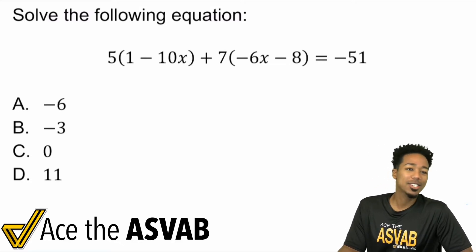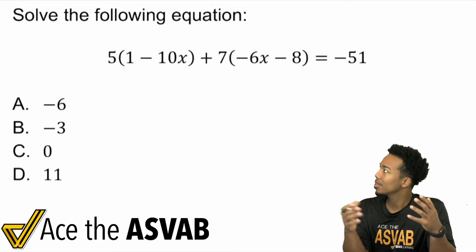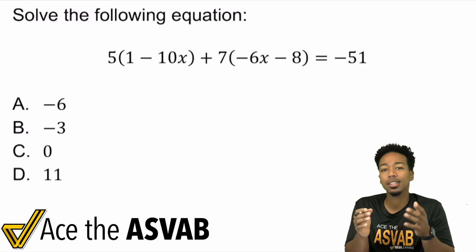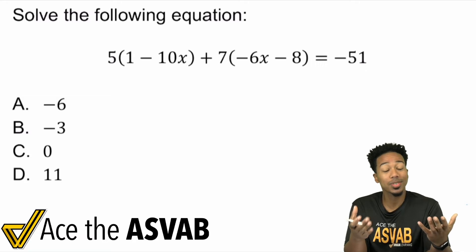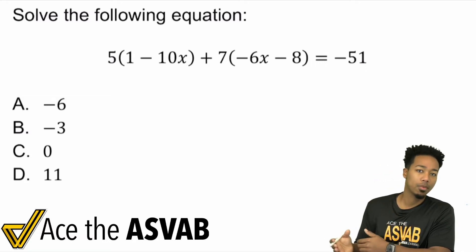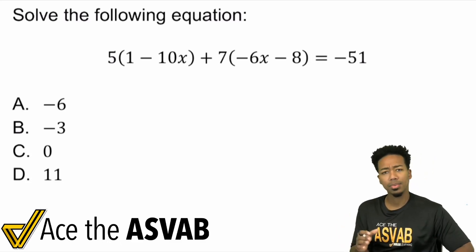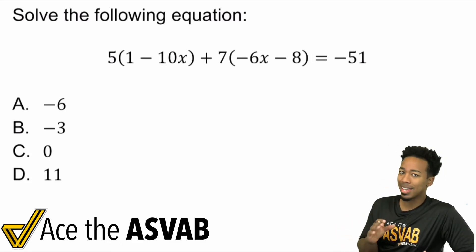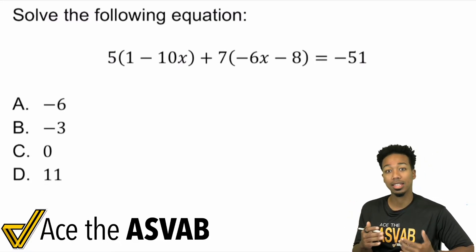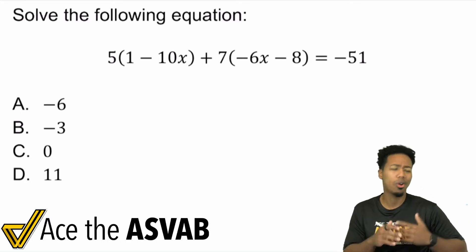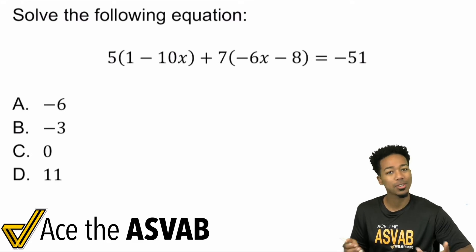Now, as you guys know, solving equations can look like a ton of different things. This one is one of the slightly more complicated examples that we can look at. But remember: at the end of the day, solving equations is really about understanding the order of operations and understanding how to work backwards. When you're feeling anxiety about something like this, chances are you're probably looking at the entire thing or thinking about all the work you have to do. But you can only do one thing at a time, so let's learn how to calmly get through this.